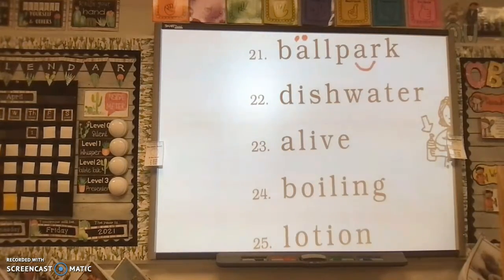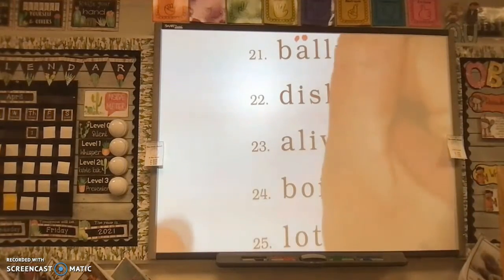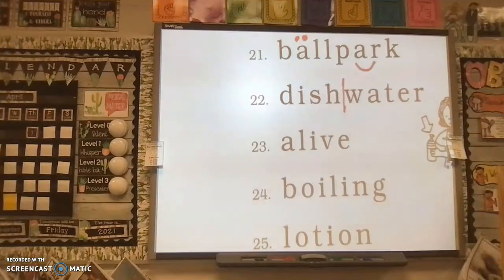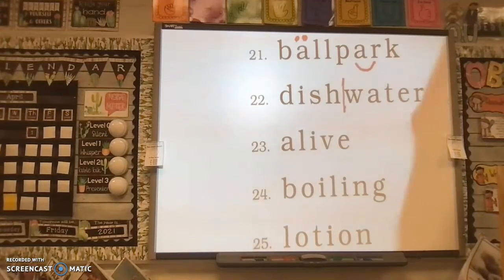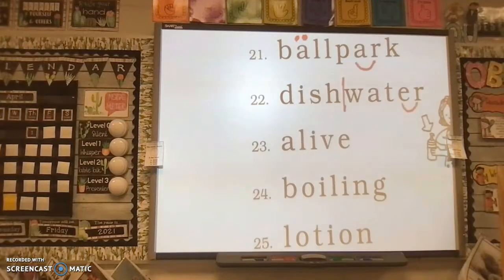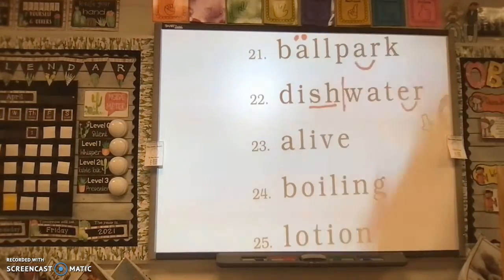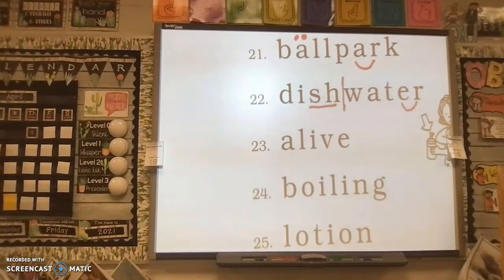What about 22? What do you see in 22? Yes, it's a compound word. Fantastic. What other obvious codes do you see? Yes, I see bossy R. Yes, I see diagraph S-H. Is that it? All right, let's go ahead and do vowels.